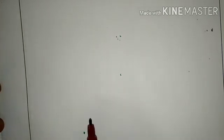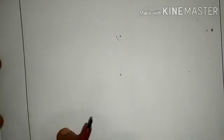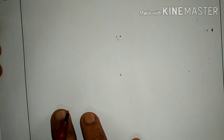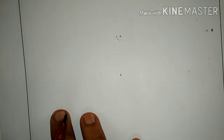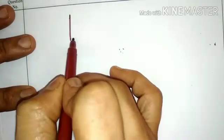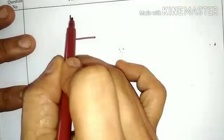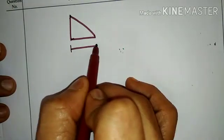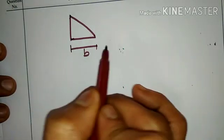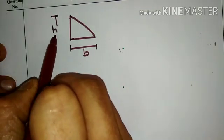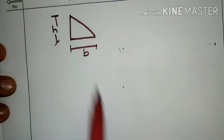Hello, hello everyone. Welcome to this session on moment of inertia for the triangular section. Here we will consider a right-angled triangle, and the dimensions of this particular right-angled triangle shall be considered as base B and height H.